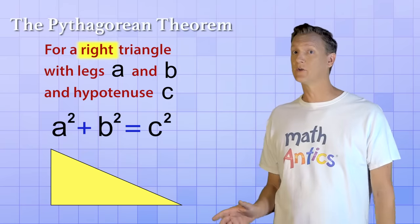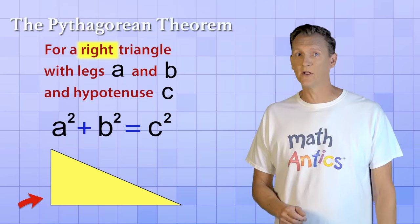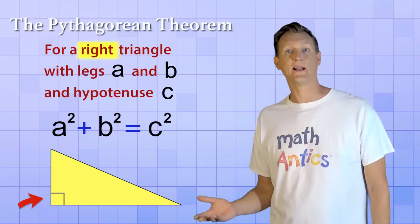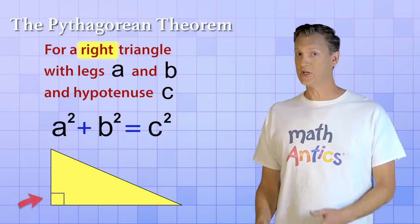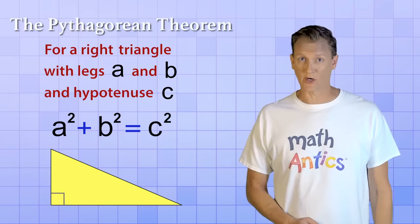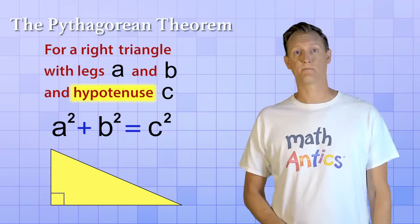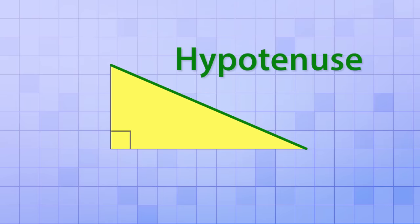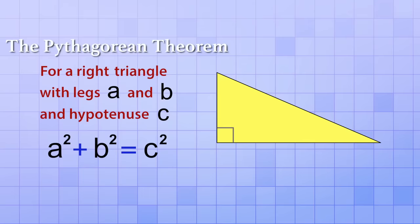Right triangles always include one right angle that's usually marked with a square symbol to help you identify it. And you need to know which angle is the right angle because it helps you identify an important side of the triangle called the hypotenuse. The hypotenuse is the longest side of a right triangle and it's always the side that's opposite the right angle — in other words, the side that doesn't touch or help form the right angle itself. In order to use the Pythagorean Theorem, you need to be able to identify the hypotenuse, because that's what the variable c stands for.